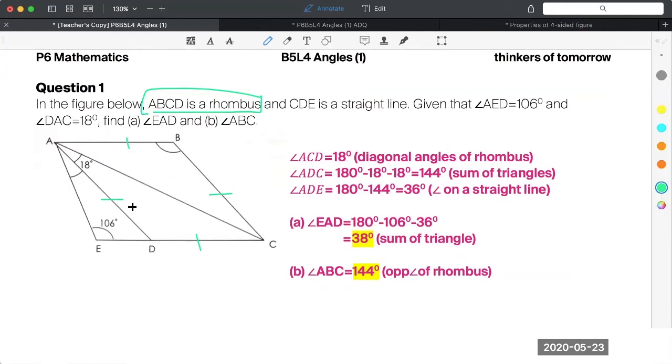Now next, can you see that already? Can you see that ADC is an isosceles triangle? So I know that this is also equals to 18 degrees. Understand?